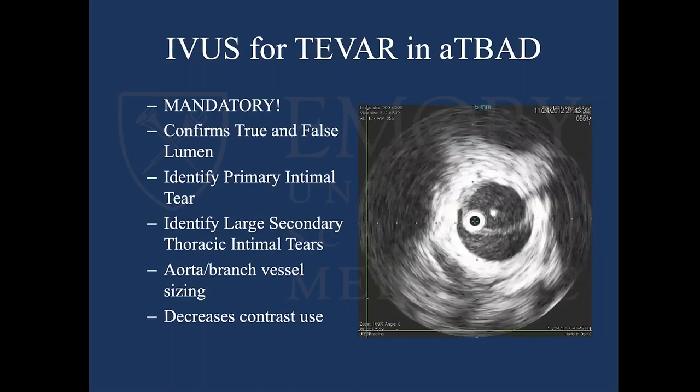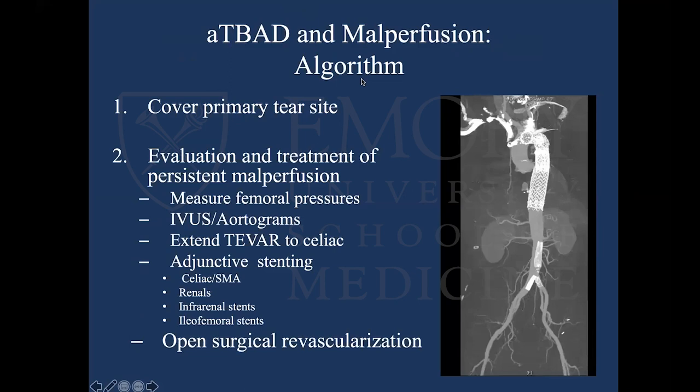For malperfusion, the algorithm is: cover the primary intimal tear and then reevaluate. We adopted techniques from the cath lab — sheaths in both groins, measuring pressures comparing the right radial artery to femoral pressures. We typically stent all the way to the celiac and reassess, then may need branch vessel stenting into the celiac, SMA, or renals, or an iliac stent. If you're still not completely revascularized, you need open revascularization — possibly a fem-fem bypass. You have to get all of that open before you leave the OR.